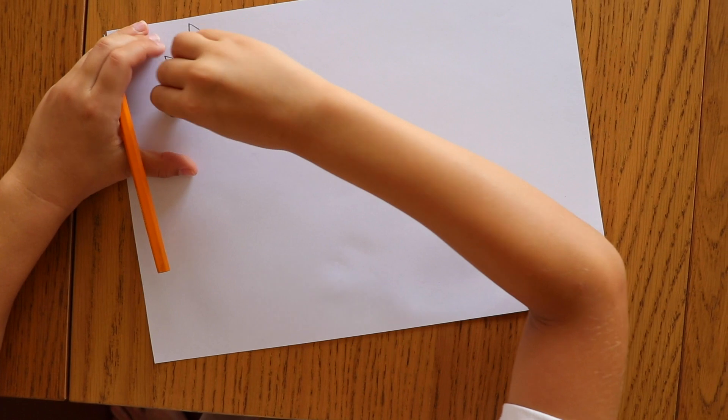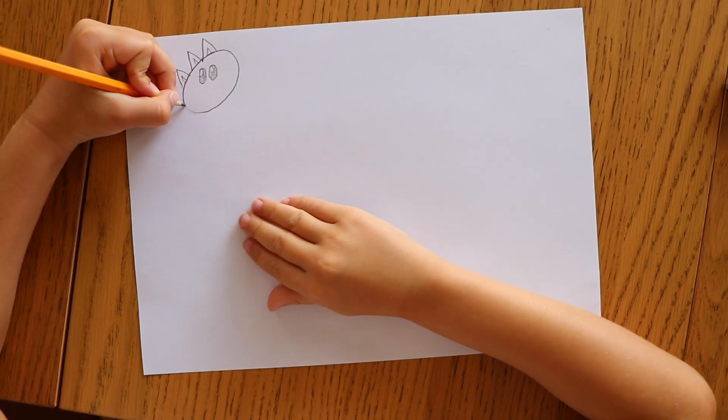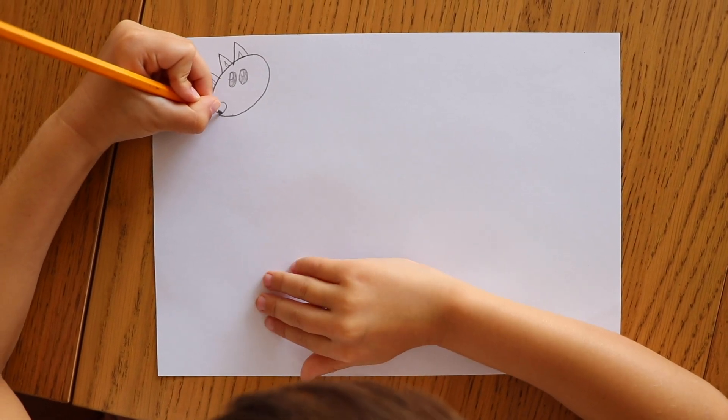Rub off this part, one of the parts of the circle. And draw a C. And draw a spiky T.